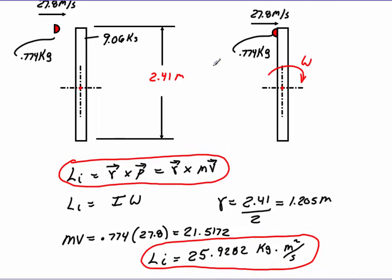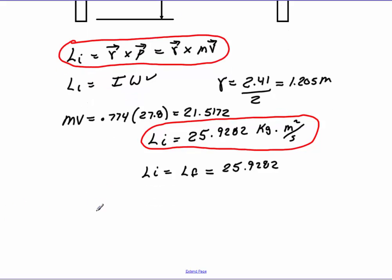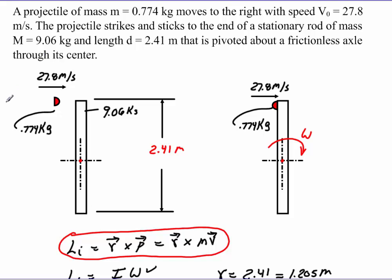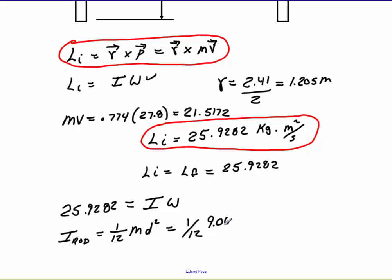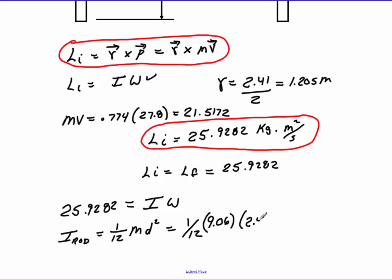Now we can go back, and if we want to find out what this value is, we know that angular momentum is equal to the moment of inertia times the angular velocity. So we'll take 25.9282 equal to I times angular velocity. The I value of the rod, about its center, will be using the equation 1/12 times the mass times d squared or length squared. So that's going to give me 1/12, and the mass is 9.06, and the length of this is 2.41.